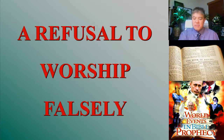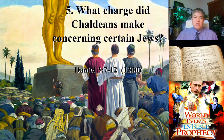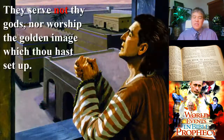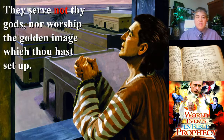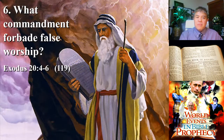Now, let's talk about the refusal to worship falsely. The Chaldeans — the wise men of Babylon — knew there were three Hebrews who did not fall down and worship the image. In Daniel 3, verses 7 and 12, they made a charge against these certain Jews, saying: 'They serve not thy gods, nor worship the golden image which thou hast set up.'